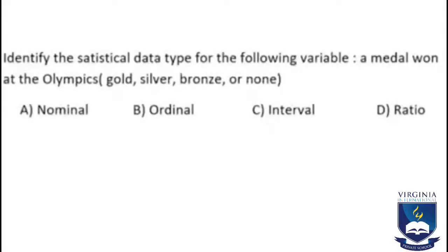Identify the statistical data type for the following variable: a medal won at the Olympics (gold, silver, bronze, or none). Nominal means name, ordinal means first/second/third, interval means a period, ratio means a fraction. Since the set is named, the correct answer is A, nominal.